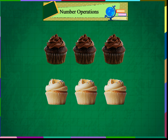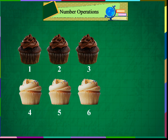Rani bought 3 chocolate cupcakes and 3 vanilla cupcakes. She now has 3 chocolate cupcakes and 3 vanilla cupcakes, which makes 1, 2, 3, 4, 5, 6 cupcakes. So 3 plus 3 is equal to 6.